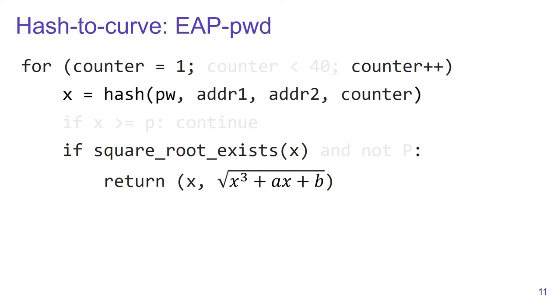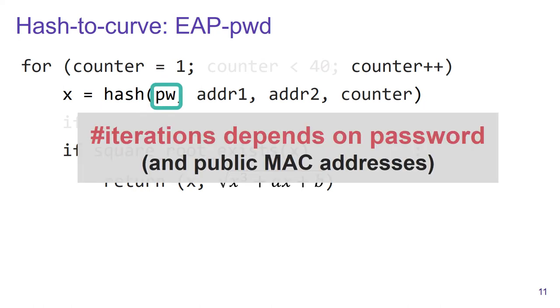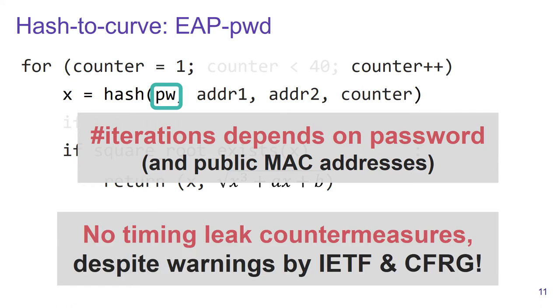Now, some of you may already see the problem here. The problem is that the number of executions that are performed by this algorithm now depend on the password and also on the public MAC addresses. Perhaps what's most surprising is that the IETF and the CFRG warned that this will create side channels in the algorithm. Unfortunately, the designers discarded these side channels because they thought they were theoretic and that they would not leak the password of the network.